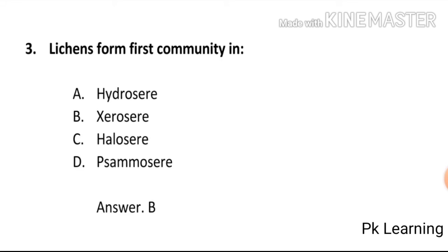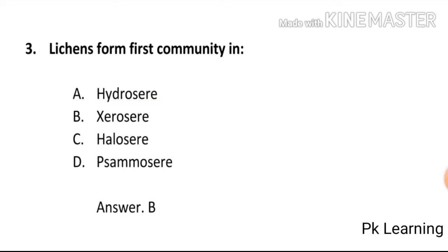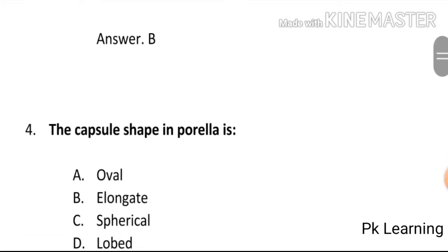Lichens form the first community in: A) Hydrosere, B) Xerosere, C) Hellosere, D) Samosere. The answer is B, Xerosere. Lichens form the first community in Xerosere. B is the correct option.